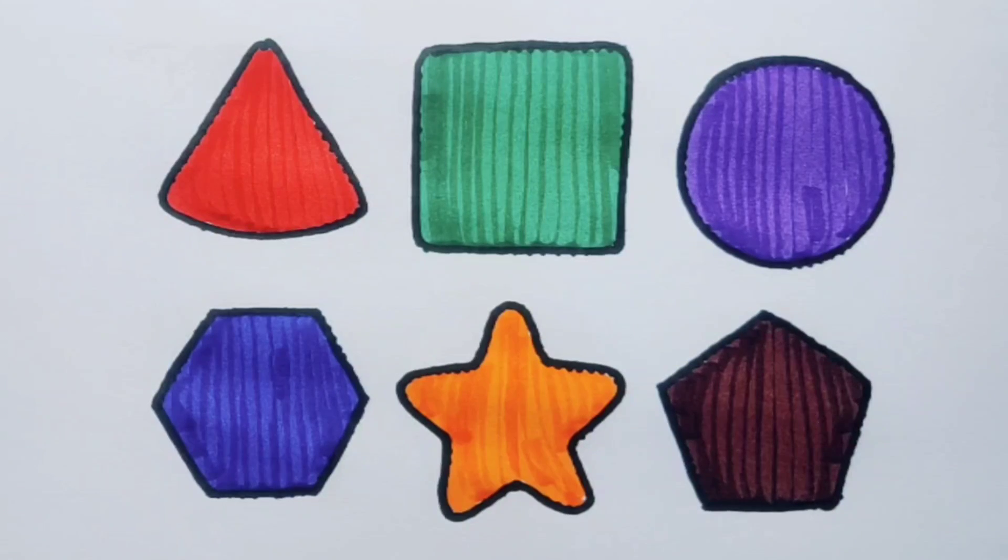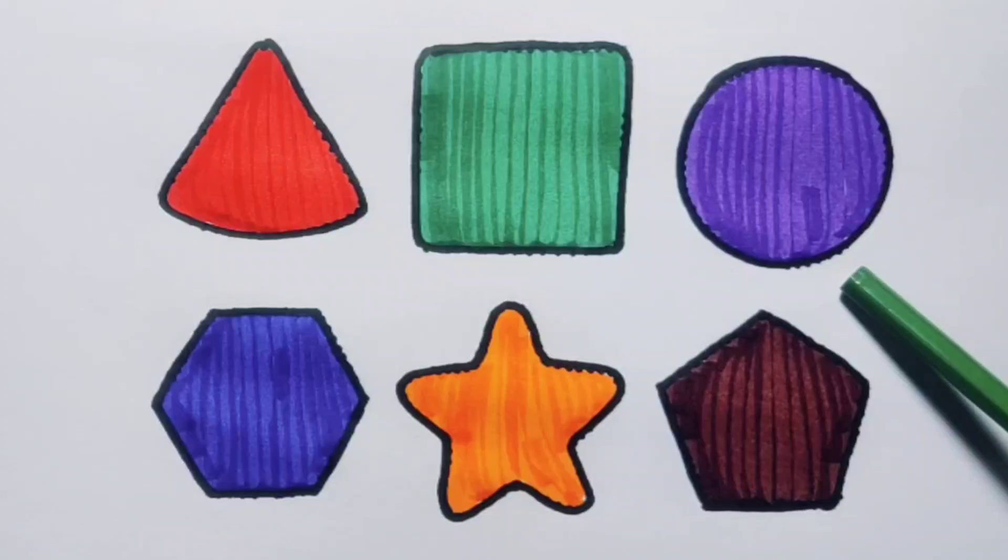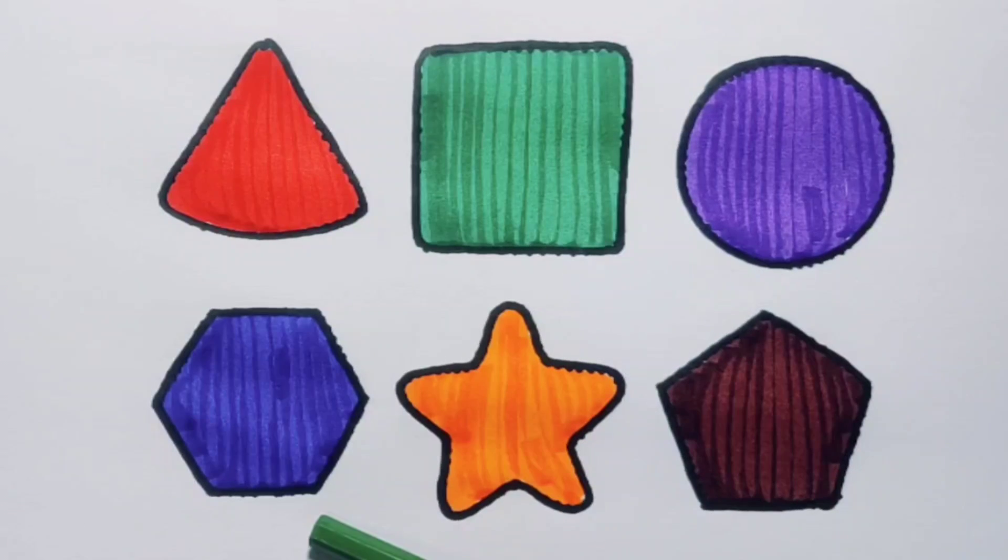What did we learn? We learned red triangle, green square, purple circle, blue hexagon, orange star, and chocolate pentagon.